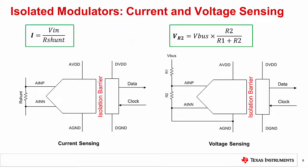Here are two common applications for isolated modulators: current sensing and voltage sensing. For shunt-based current sensing, the input voltage range of the isolated modulator determines the value of the shunt resistor based on the current to be measured. Low power or battery-operated applications benefit from less power dissipation through the shunt, which can be achieved by reducing the shunt resistance and pairing it with an appropriately sized modulator input range. TI offers isolated modulators with both a ±50 millivolt and a ±250 millivolt input range. Many of these devices also include integrated features such as an internal voltage reference, internal clock, and Manchester-coded or uncoded bitstream output options.